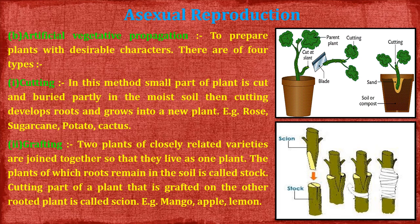Now we come to artificial vegetative propagation. The first method is cutting. A small part of the plant is cut and buried firmly into moist soil; the cutting then develops roots and grows into a new plant. Examples: rose, sugarcane, potato, cactus. For instance, if we cut a stem from a rose plant and plant it, a new rose plant forms.